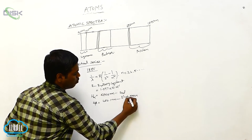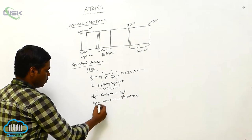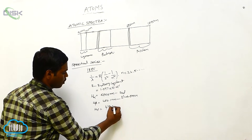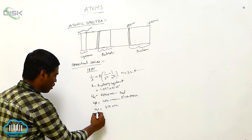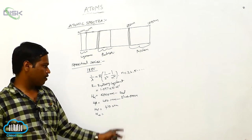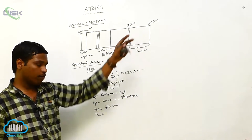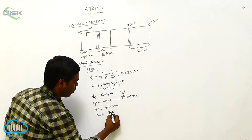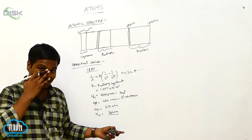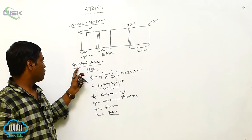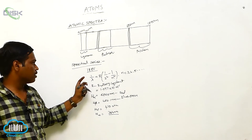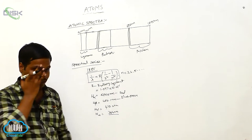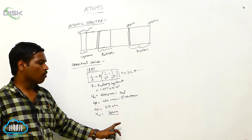Next, he observed H-gamma at 410.2 nanometers. If we substitute n = infinity, he got H-infinity at 364 nanometers. This is the least wavelength observed in the Balmer series.